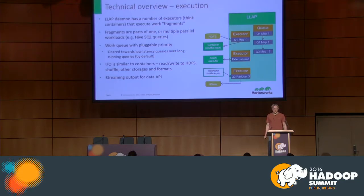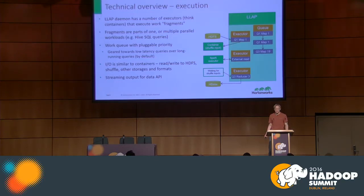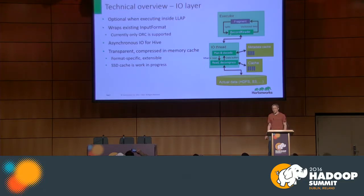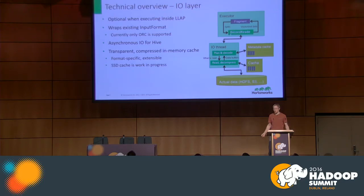There's a queue of things. You put items in the queue to execute according to an algorithm that favors shorter queries by default. It takes them out of the queue, executes them, and you get the data. Inside LLAP there's also an IO layer consisting of two main things: asynchronous IO and caching. There's a separate thread for IO which uses caching and reads data from different sources.